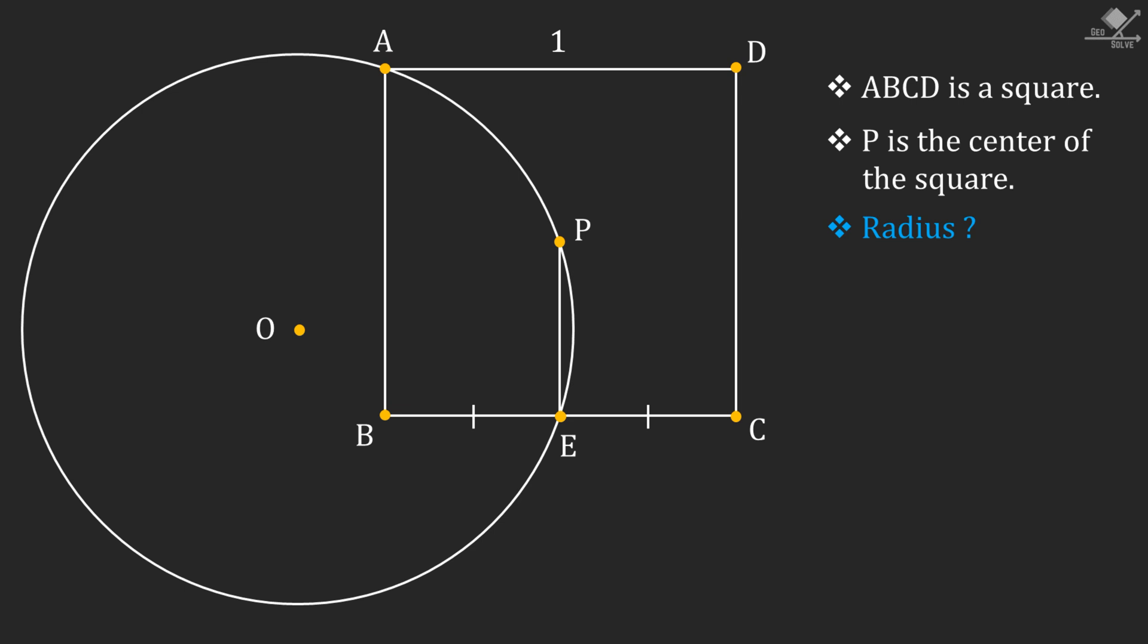First, since we know that point E is the midpoint, line segments BE and EC will be 1/2 units. And since point P is the center of the square, chord PE will also be 1/2 units.